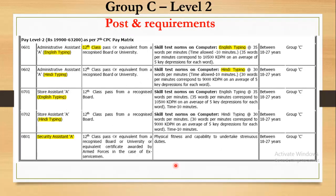For Group C posts at Level 2, the in-hand salary will be around 30,000 to 35,000 rupees per month. The first post is Admin Assistant A in English — candidates who are 12th class pass can apply. The required skill is English typing at a minimum of 35 words per minute, which you can practice and achieve. The age for all Group C posts is 18 to 27 years.